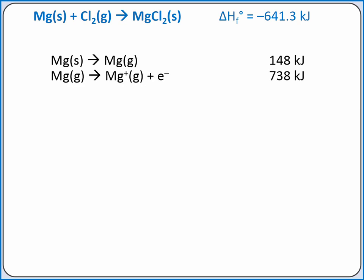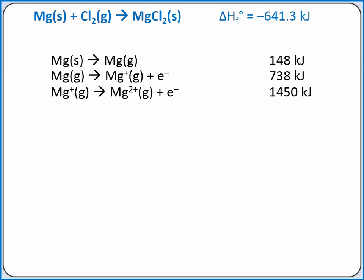The next information we're given is the first ionization energy of magnesium, which is the energy needed to remove an electron from a gaseous magnesium atom. In our previous equation, we produced 1 mole of magnesium gas, which is not in the overall equation. We need to cancel out 1 mole of magnesium gas product by adding 1 mole of magnesium gas reactant, so we multiply this equation and its enthalpy change by 1. Our next equation is the second ionization energy of magnesium — the energy needed to remove the second electron from a gaseous magnesium ion. We multiply this equation and its enthalpy change by 1.